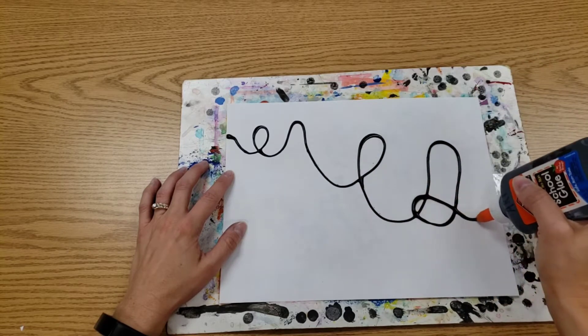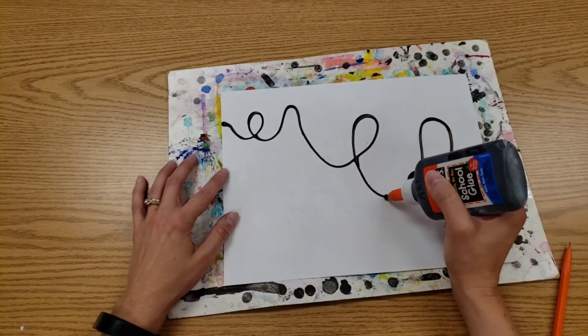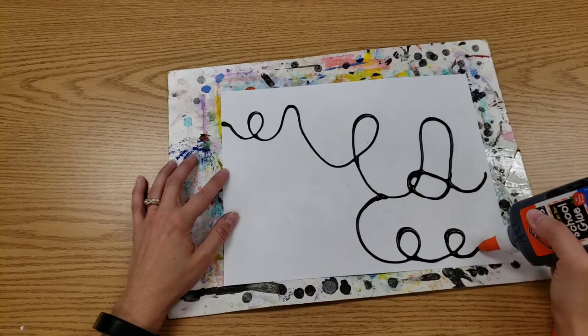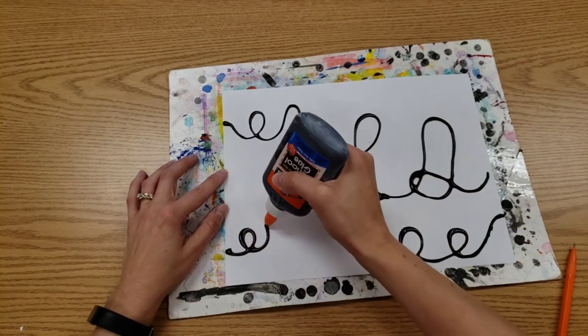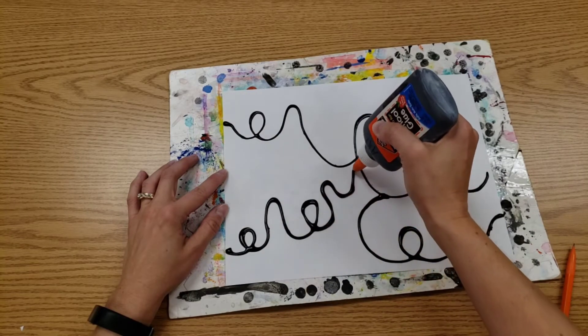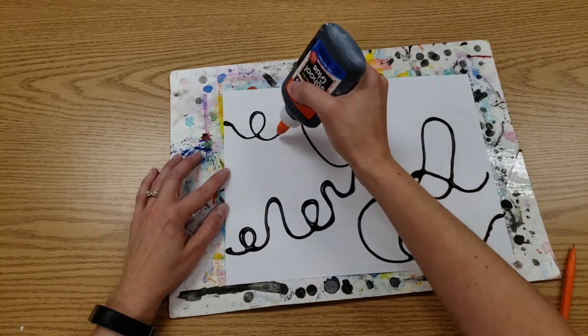Notice how my glue is really low. It's touching the page or it's really close to the paper. I'm trying to not make giant puddles. I'm just making lines.